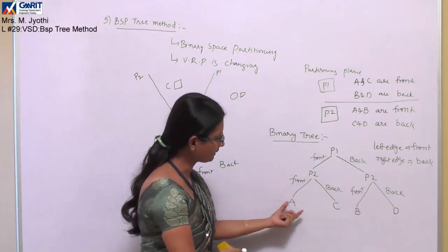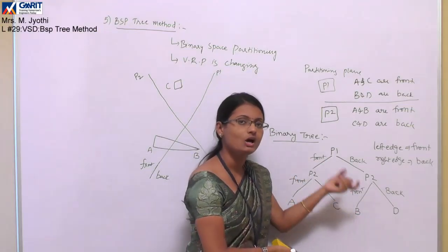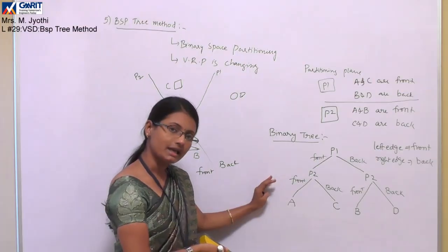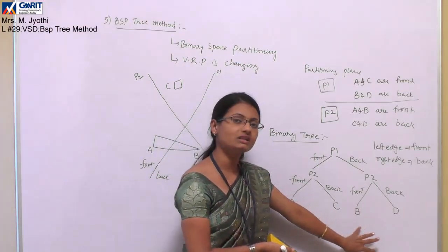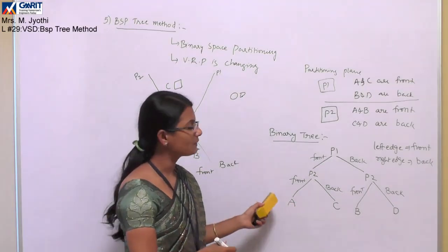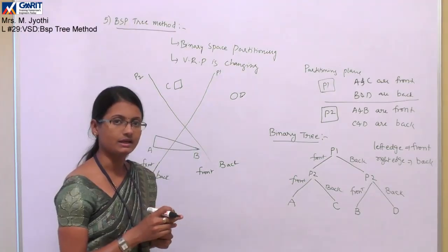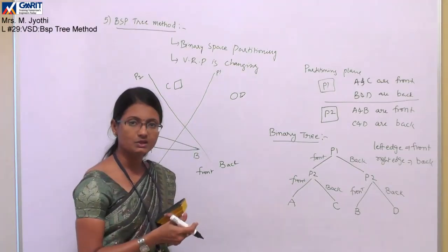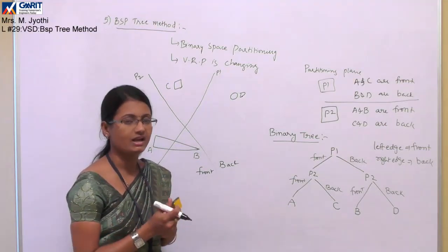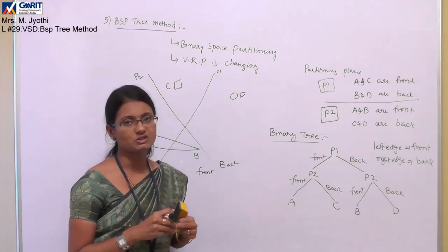To scan convert this binary tree, we process the back nodes first and then the front nodes. This is how the binary space partitioning tree is processed. Note that special hardware is required for BSP tree processing in some systems, which is a drawback — it is very costly, which is why people often avoid this method.